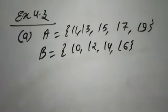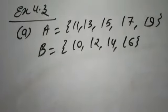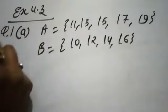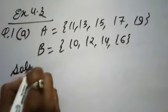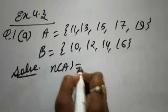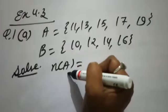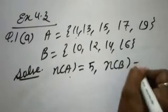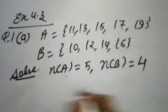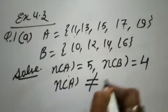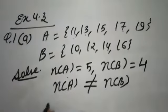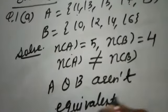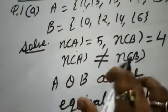This is question number 1, part A. We will identify if sets A and B are equivalent or not. To identify equivalent sets, we need to find out the number of elements in each set. The number of elements in set A is 1, 2, 3, 4, and 5 — so 5 elements. The elements of set B are 1, 2, 3, and 4 — so 4 elements. The number of elements in set A is not equal to the number of elements in set B. So we can say A and B are not equivalent sets because they have a different number of elements.